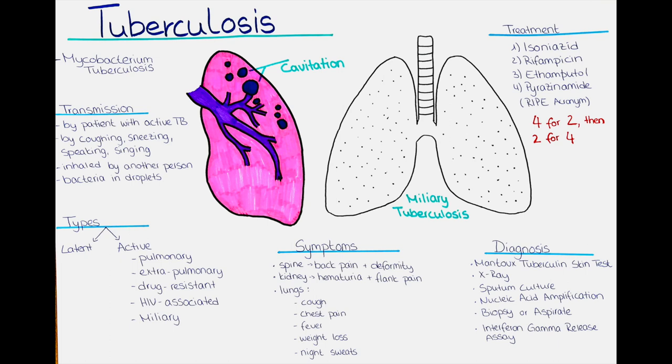A simplified version to remember the treatment plan for tuberculosis is 4 for 2, then 2 for 4. This means that the patient receives all 4 of the earlier mentioned medications for 2 months, and after these 2 months, the patient receives 2 of the medications for another 4 months. Depending on the severity of the infection, this scheme can however be altered. You can find more detailed information about the treatment on the webpage of the WHO.